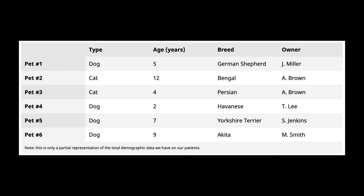But we have added a table foot with an additional note. Our table foot contains a table data element that spans all five columns using the colspan attribute, and we use embedded styling to make the typography display a little smaller.